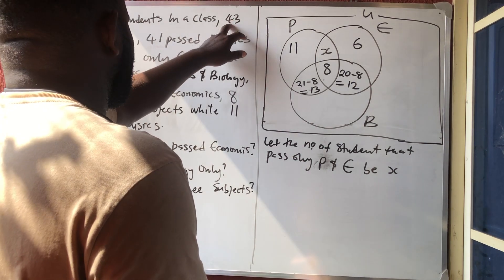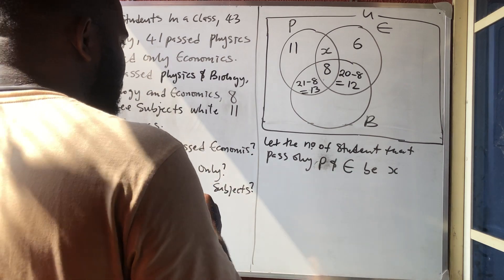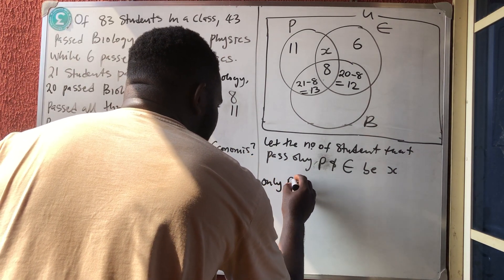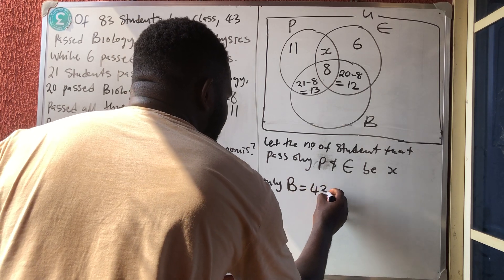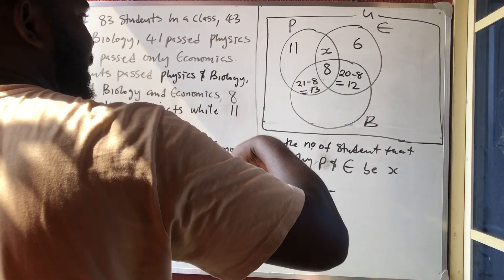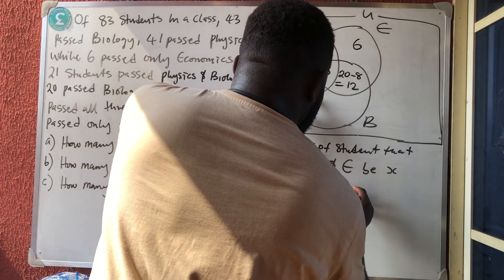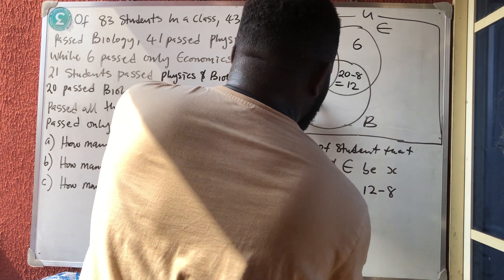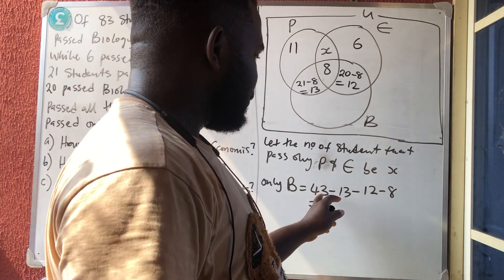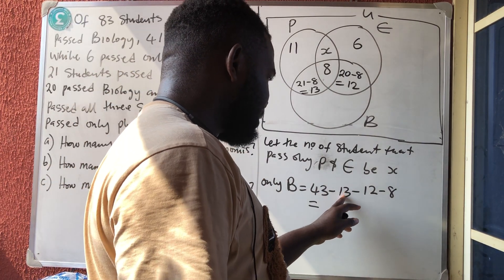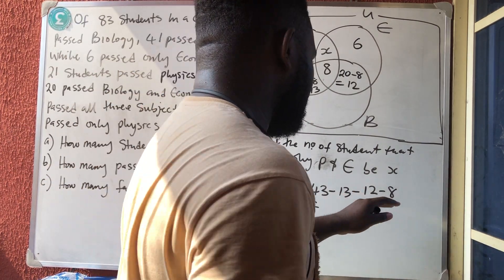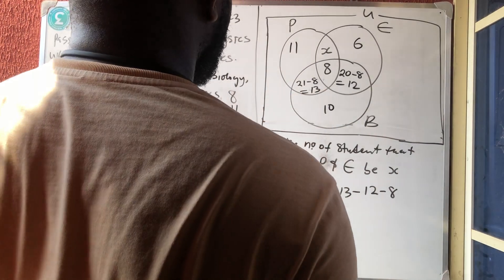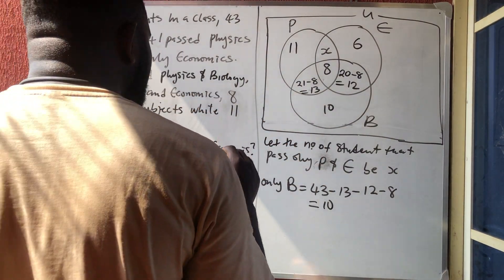Now, 43 passed Biology. To find only Biology, we subtract everything else that falls inside the Biology circle: 13 entered from Physics and Biology, 12 from Biology and Economics, and 8 from all three. So only Biology equals 43 minus 13 minus 12 minus 8, which gives us 10.